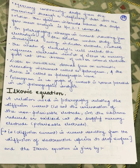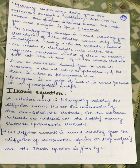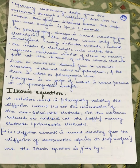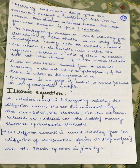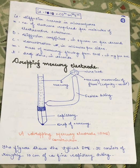The next topic is the Ilkovic equation under polarography. This equation relates the diffusion current and the concentration of the non-polarizable electrode — that is, the substance reduced or oxidized at the dropping mercury electrode, which is the polarizable electrode. The diffusion current is the current resulting from the diffusion of electroactive species — the metal ions we are analyzing — to the drop surface.